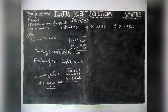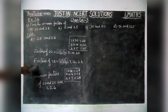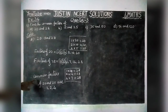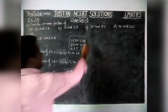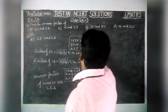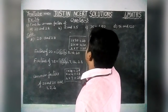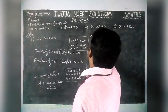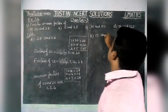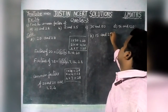First we found all the factors of 20, after that we found all the factors of 28, then we found the common factors. Next, in the same model, we are going to find Part B: 15 and 25.